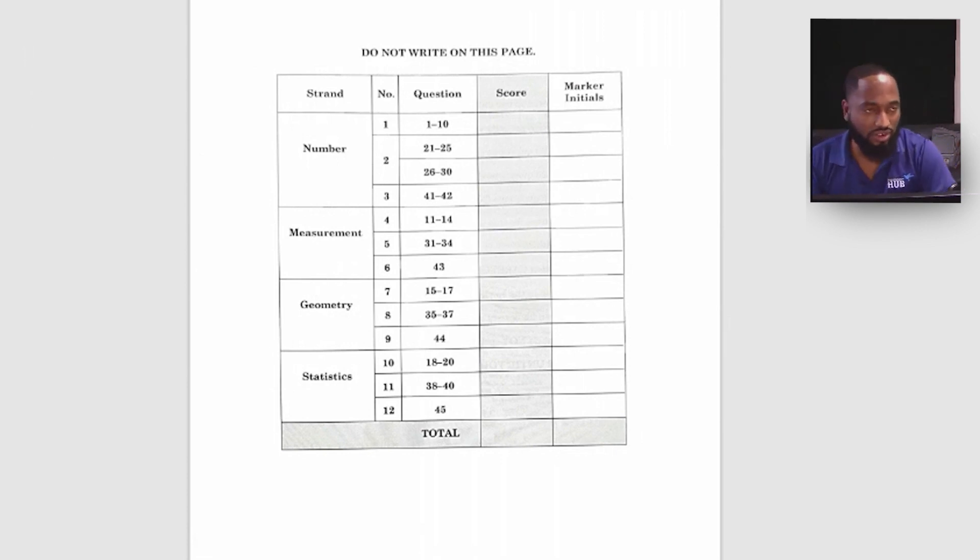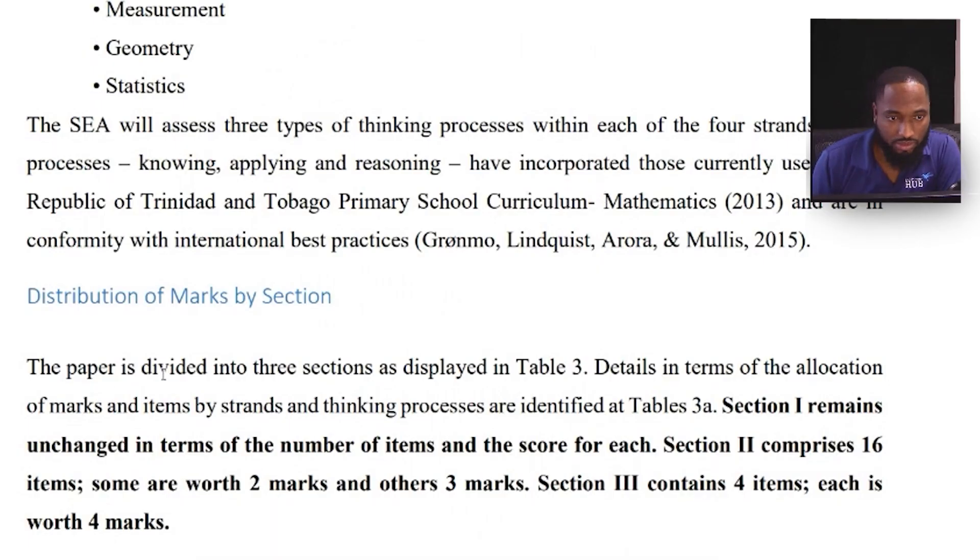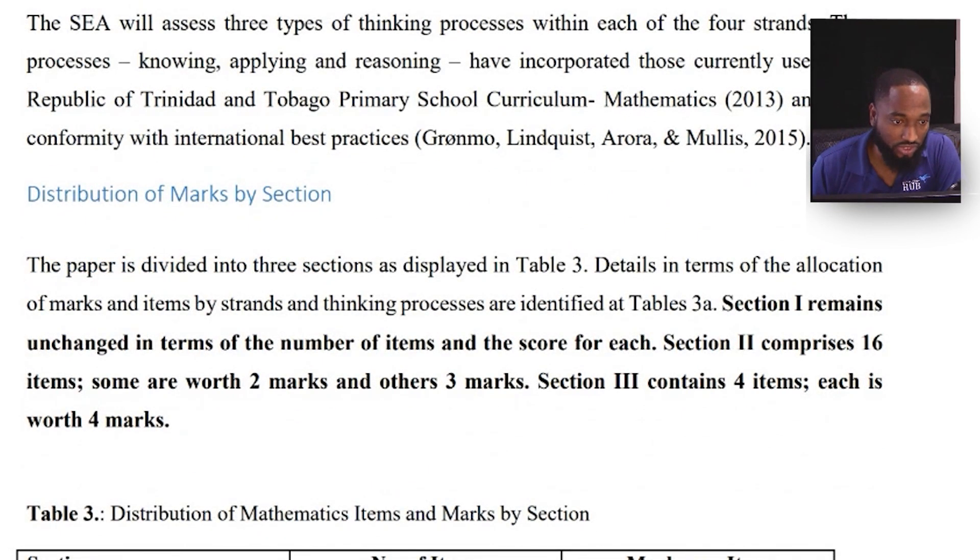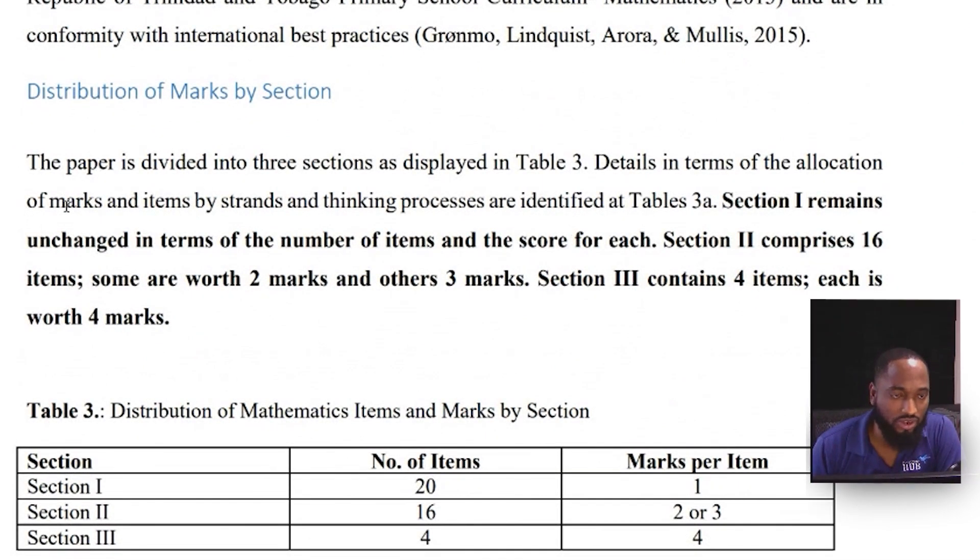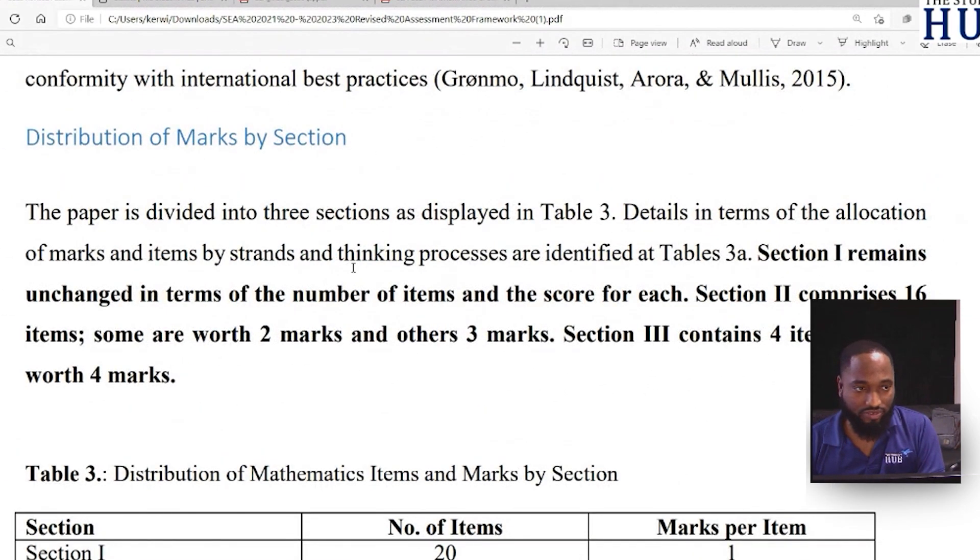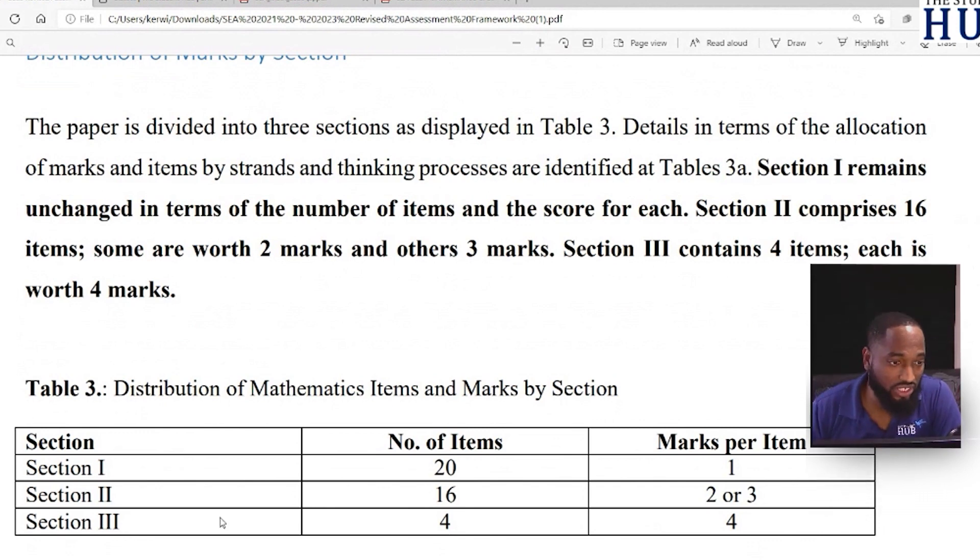Let me bring up this past paper from 2020. Number, measurement, geometry, and statistics - these strands are the same. The paper is divided into three sections. Details in terms of allocation of marks and items by strands and thinking processes are identified in the following table. Section one remains unchanged, so section one has 20 items, one mark each. Section two, we start to go into the more meaty questions - 16 items. These questions normally have some areas where students struggle.